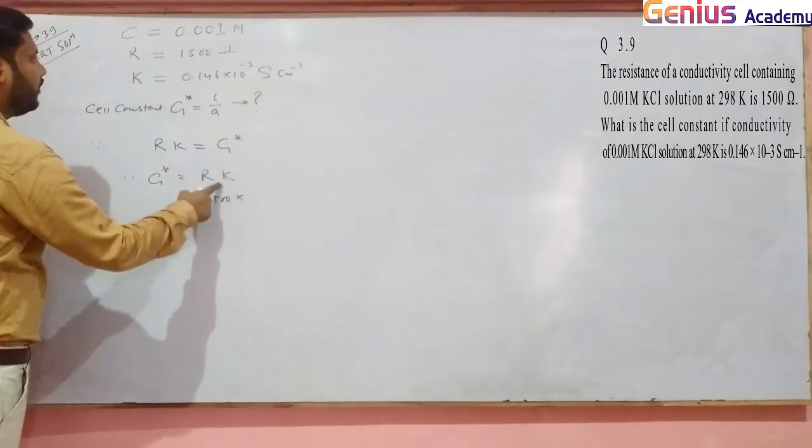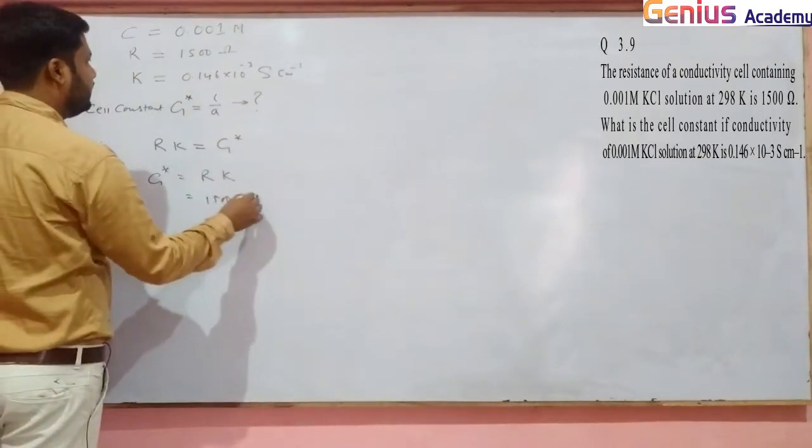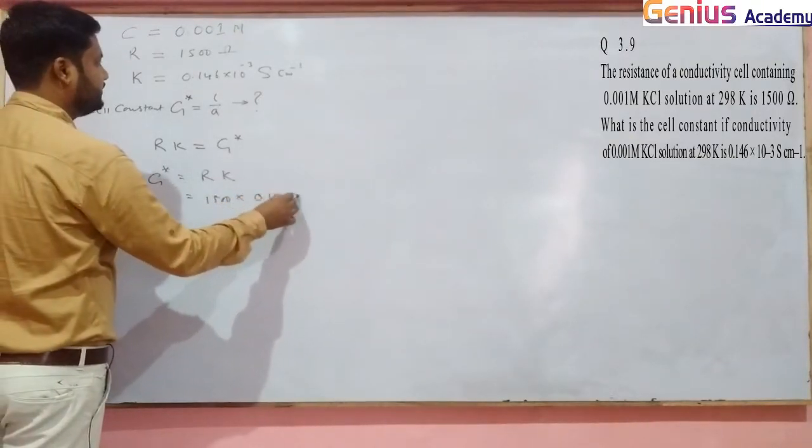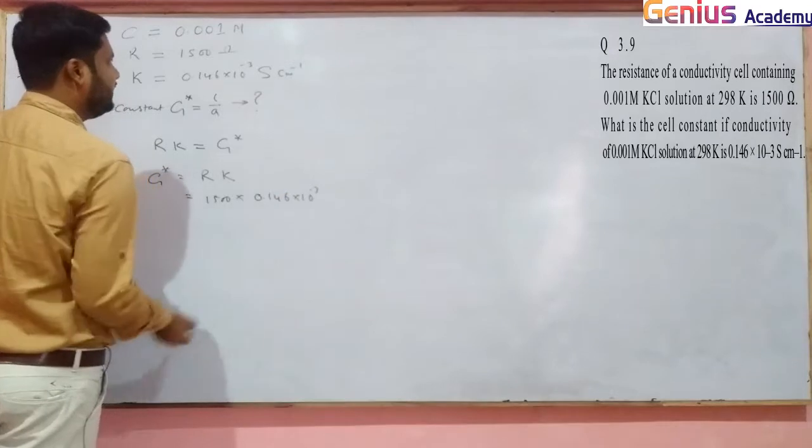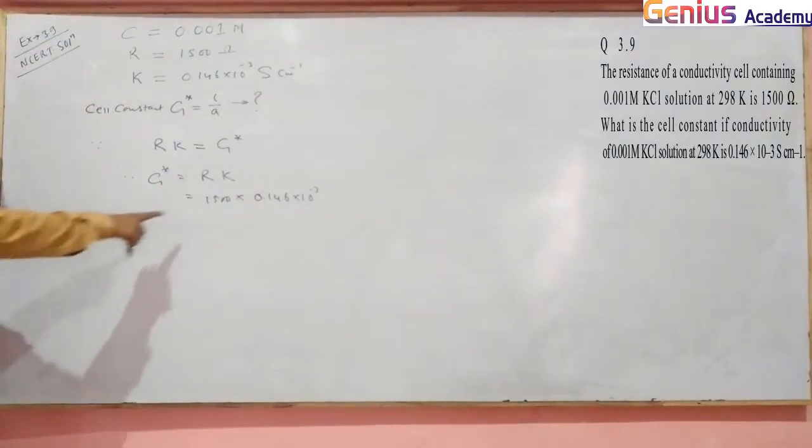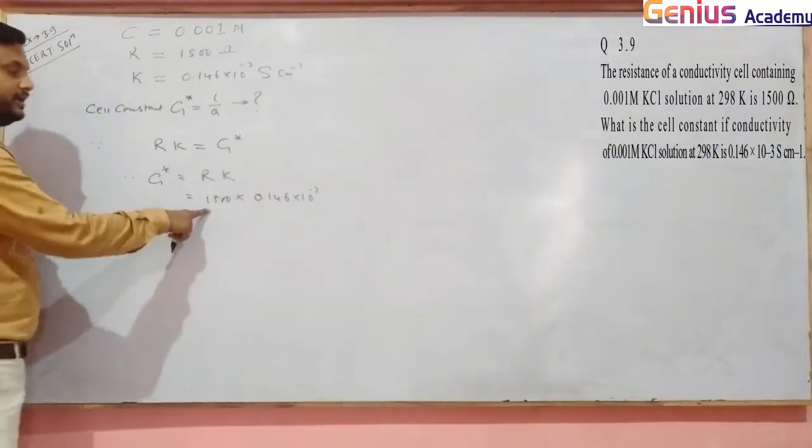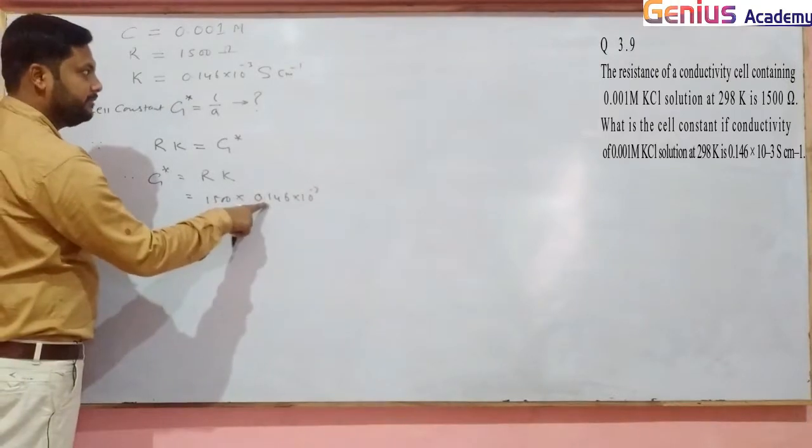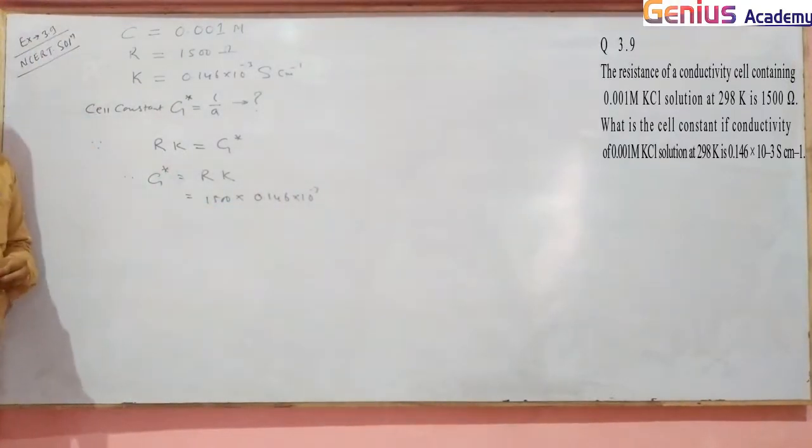Kappa is 0.146 × 10^-3 siemens per centimeter. This is ohm, and this is siemens per centimeter, so what will be the unit?